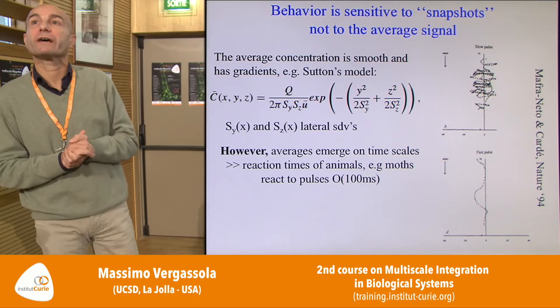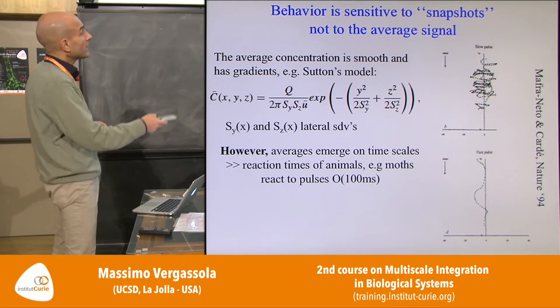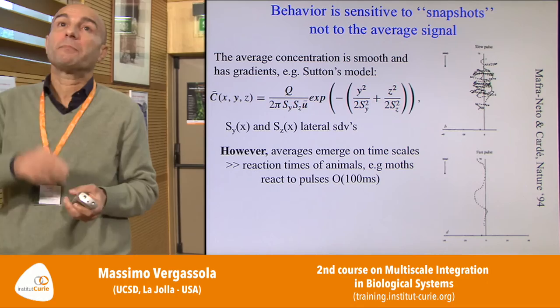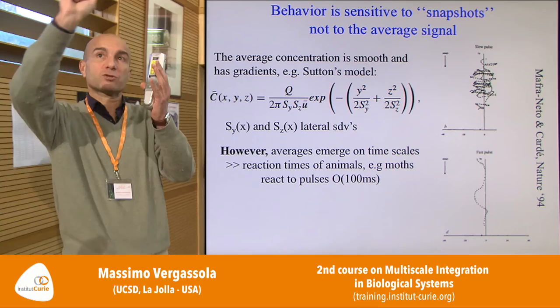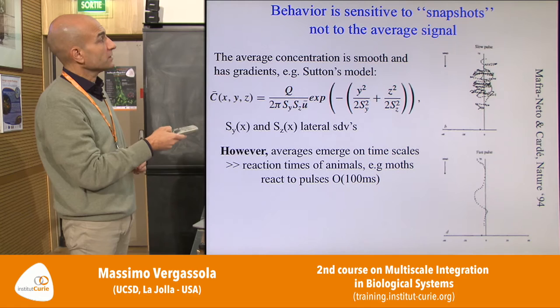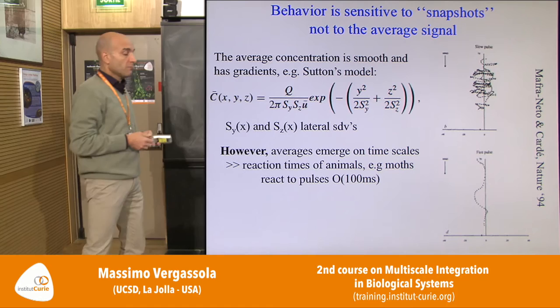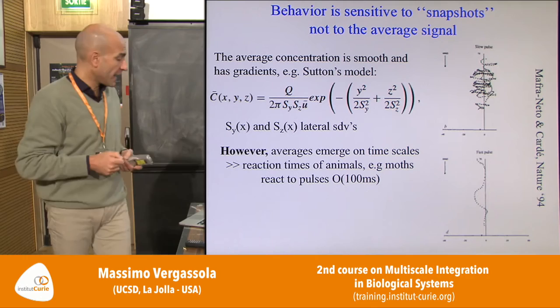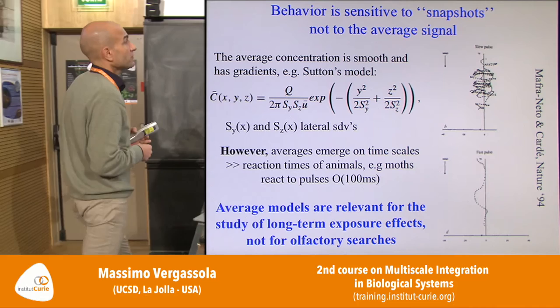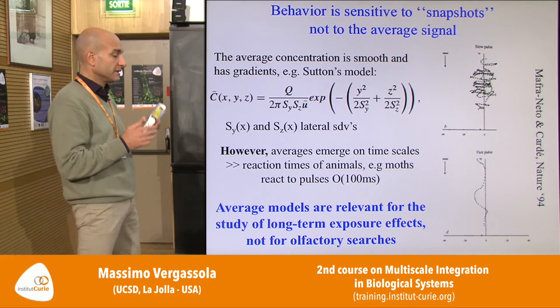Average models developed for other contexts — in particular environmental sciences — are not relevant for olfactory searches. We should look at instantaneous profiles, not means. This is important because models developed for, say, radioactive source dispersal deal with long-term exposure effects, where mean concentration and diffusion-based models make sense. For olfactory searches by animals, we need the instantaneous statistics.